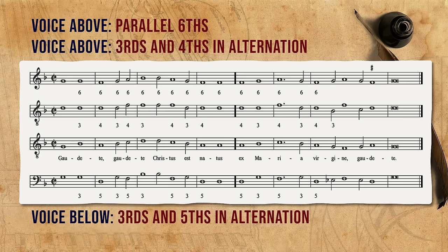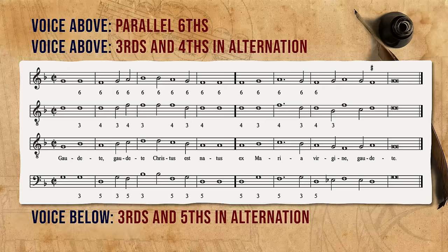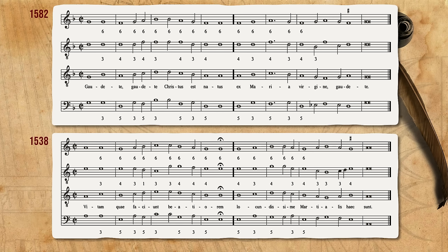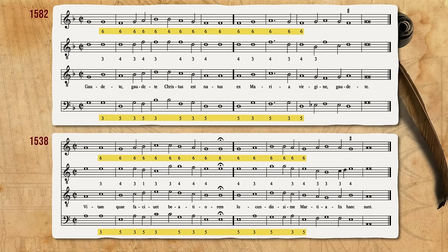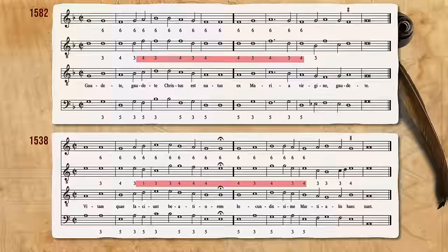Having created our own version almost entirely by ourselves, we can compare it with the early version from 1538. Apart from having different text, and being in A, a tone higher, it is very similar. The soprano and bass are practically identical, using the same intervallic scheme. The alto, however, is different.